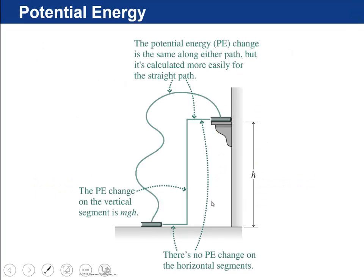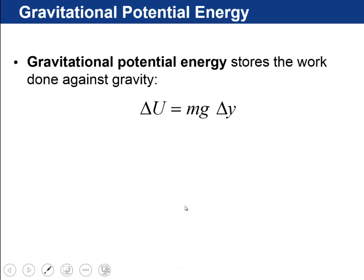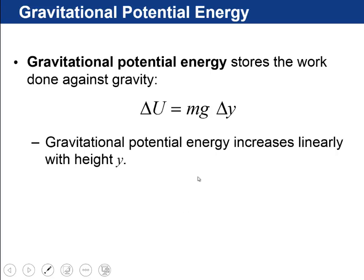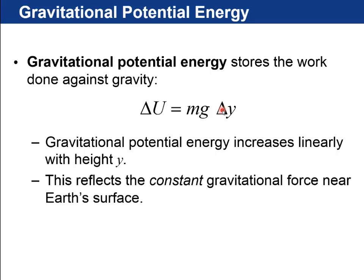Okay, so in gravitational potential energy, we're going to work out, I guess, the path just going straight up a vertical path. So remember, it doesn't matter which path we choose for this book going down to the floor. It could go up along this path or straight out and then straight down. But we can calculate the change in potential energy more easily with this straight vertical path. So it's mg times delta y. Gravitational potential energy increases linearly with height y. And that reflects that there's a constant gravitational force near the Earth's surface.